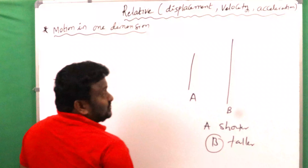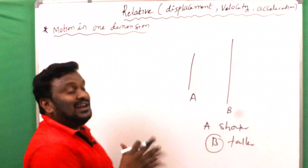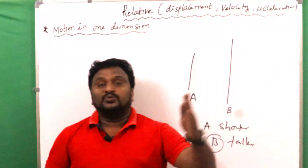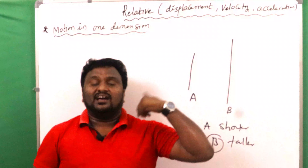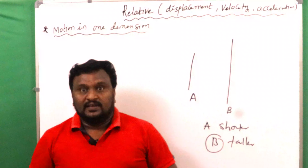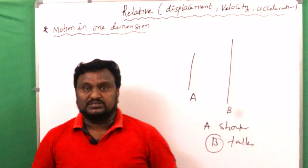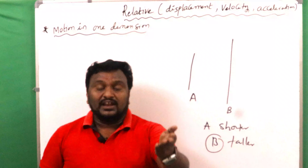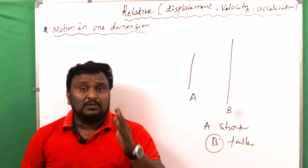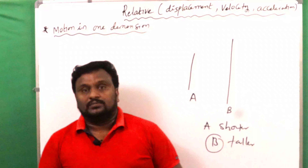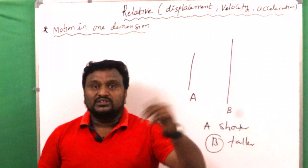So what is meant by relative motion? In general life, for example, if you have one line and another line, we can compare their heights — A is shorter and B is taller. So when we are comparing, that comparison is nothing but relative. A car is moving faster than a lorry means the motion of the car is explained with respect to the motion of the lorry.